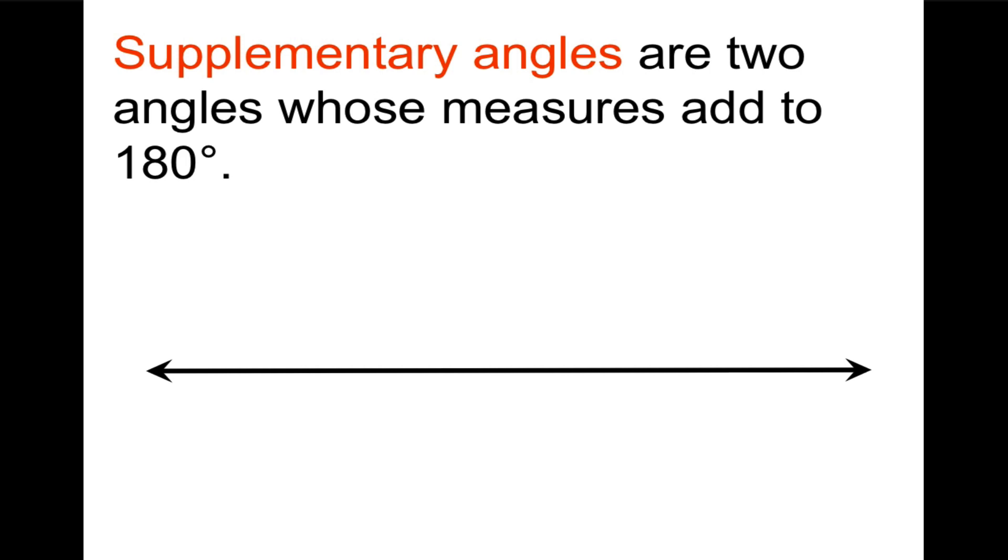The last definition for today, supplementary angles are two angles whose measures add up to 180. So here we have a straight angle which measures 180 degrees. And if I divide it into two pieces and tell you the measure of one, then you can tell me its supplement. Well, it would be the supplement of 45 degrees. Again, subtract from 180 and you should get 135 degrees. 135 plus 45 equals 180. So these are supplementary angles.